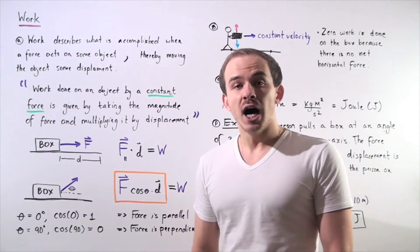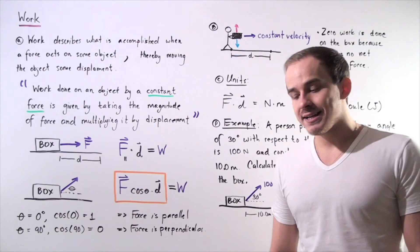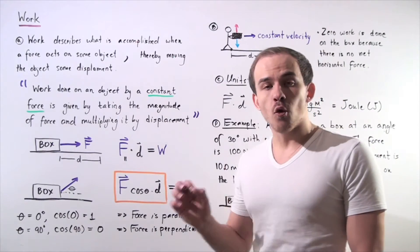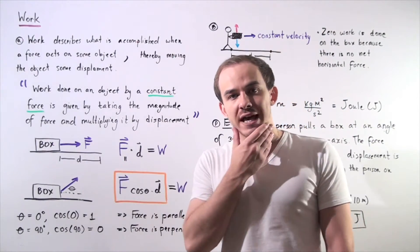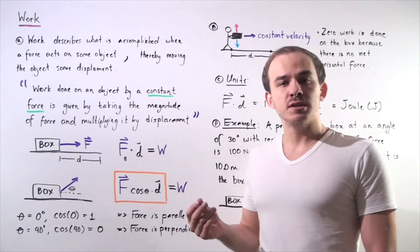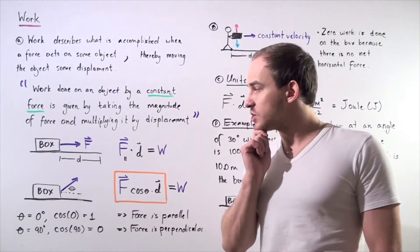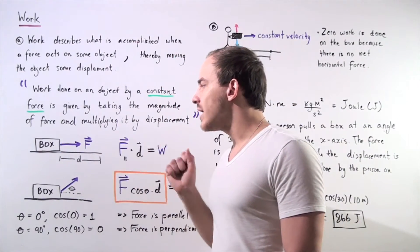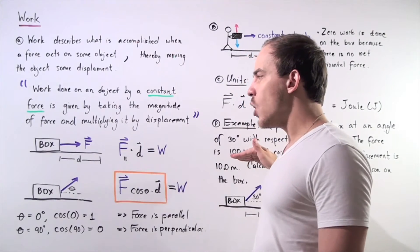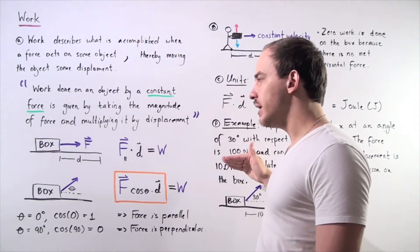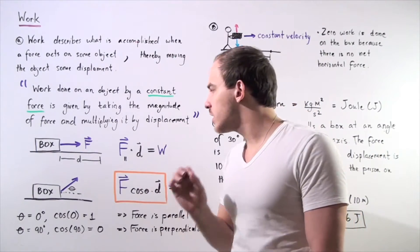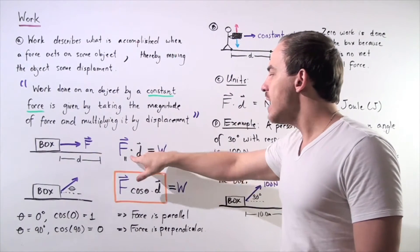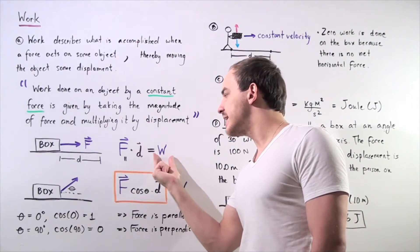In physics, work done on an object by a constant net force is given by taking the magnitude of the force acting in the same direction as motion and multiplying by the displacement of the object. So if we have a box and a force acts on the box in the same direction as motion — parallel to our displacement — we find work by taking that force and multiplying by displacement.